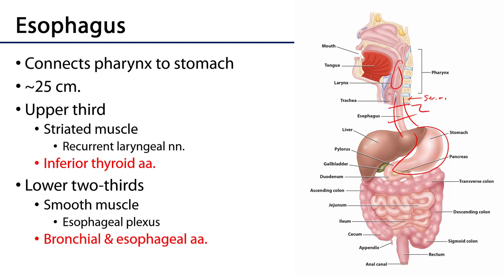The distal two-thirds would consist of smooth muscle under the control of the esophageal autonomic plexus and supplied by blood by bronchial and esophageal arteries.